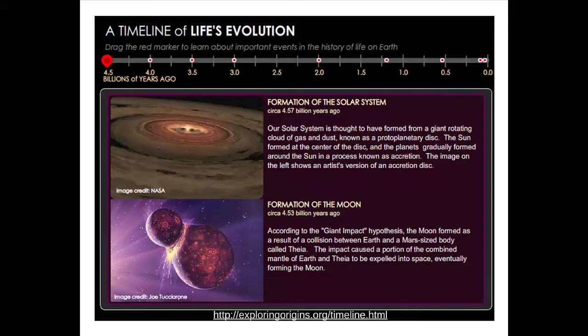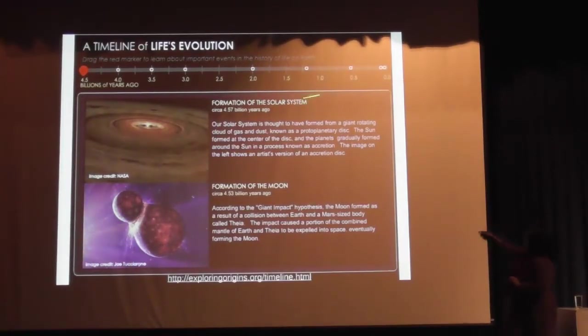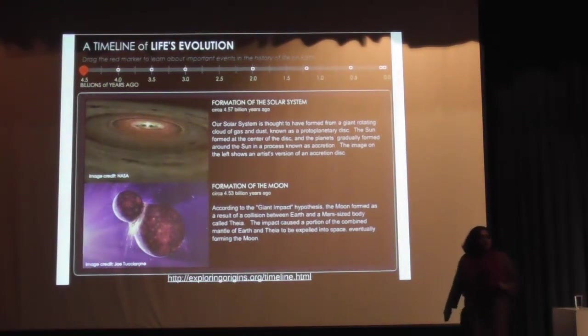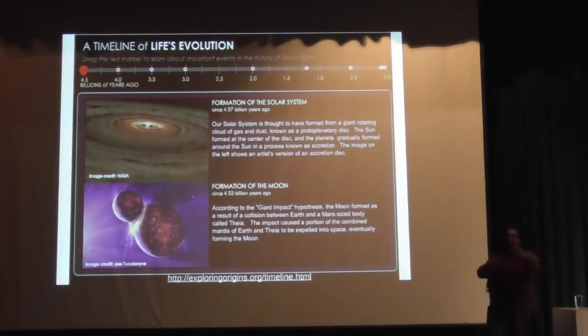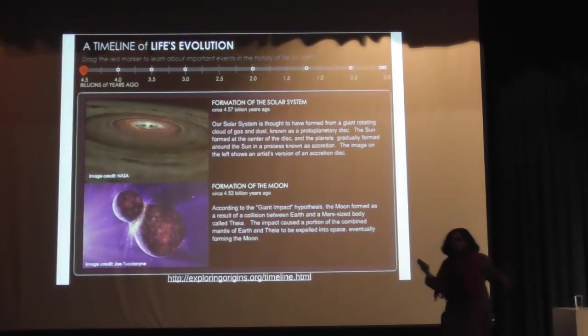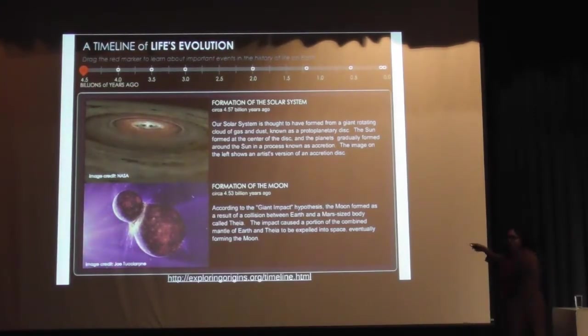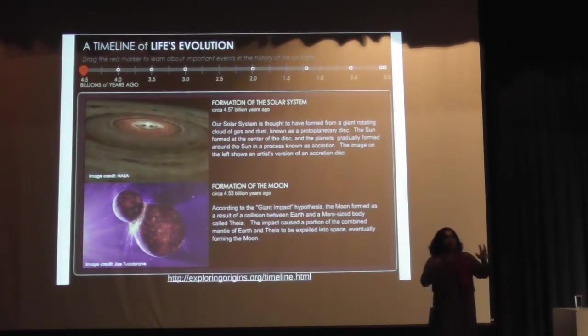Now quickly a timeline of life's evolution. The scale here that you see is billions of years ago. The solar system that we just saw is thought to have formed around 4.57 billion years ago. It was originally a cloud of gas and dust which essentially later your sun formed and then your planets formed around the sun.